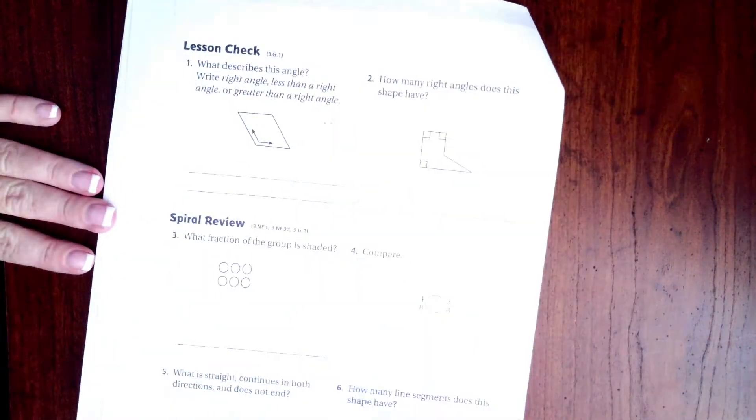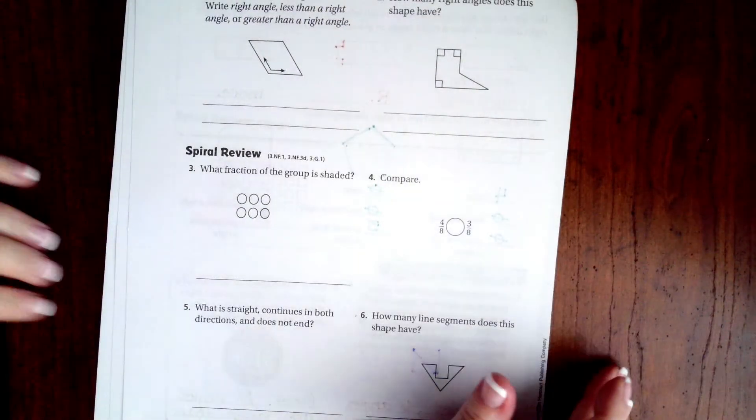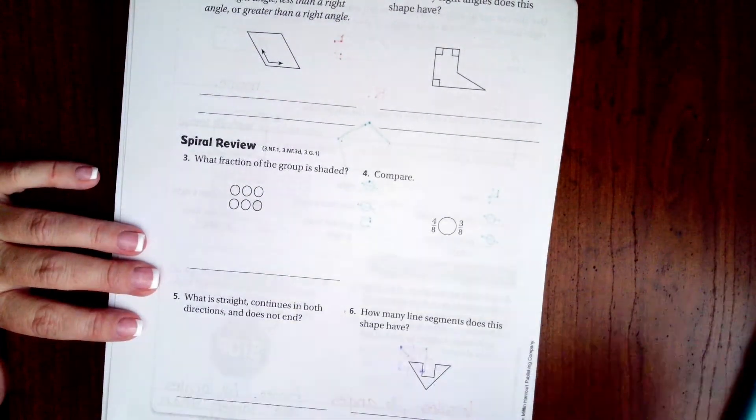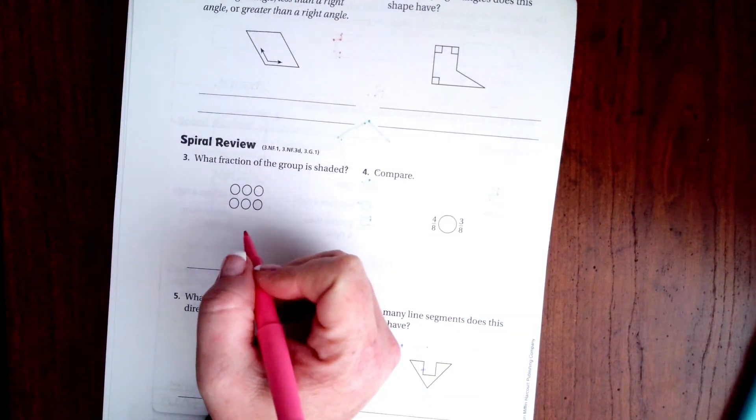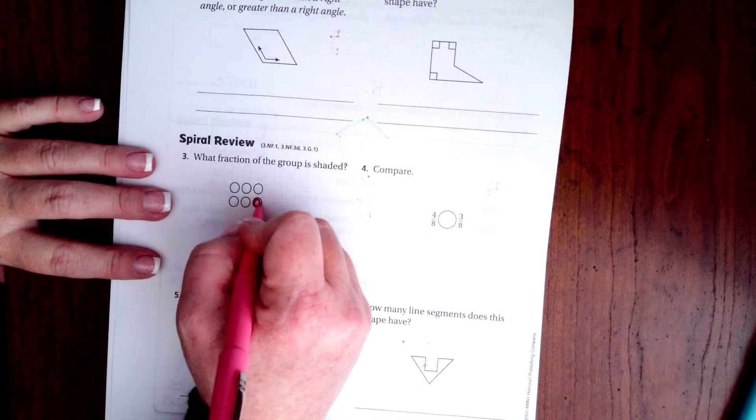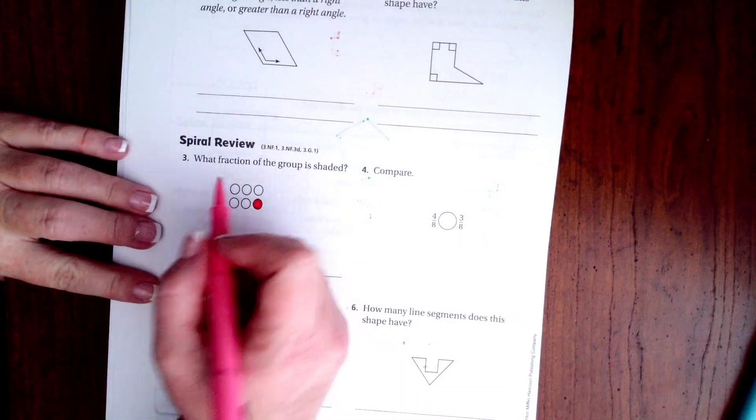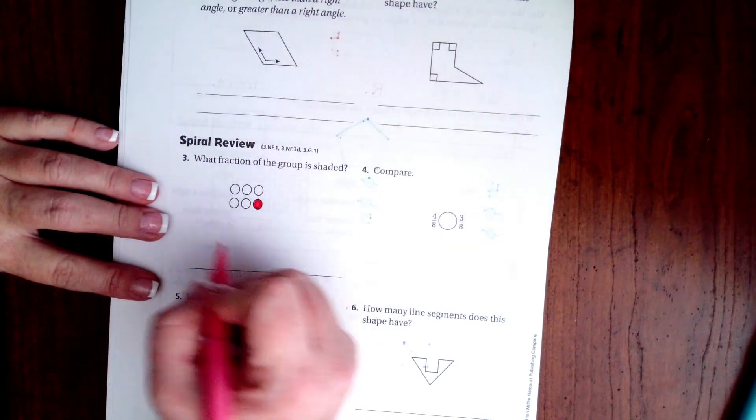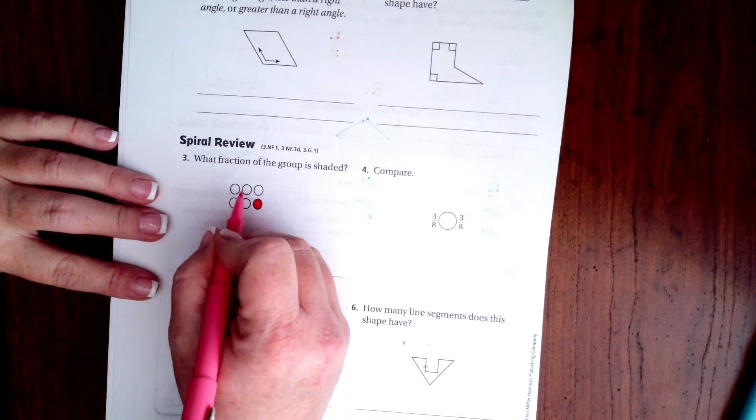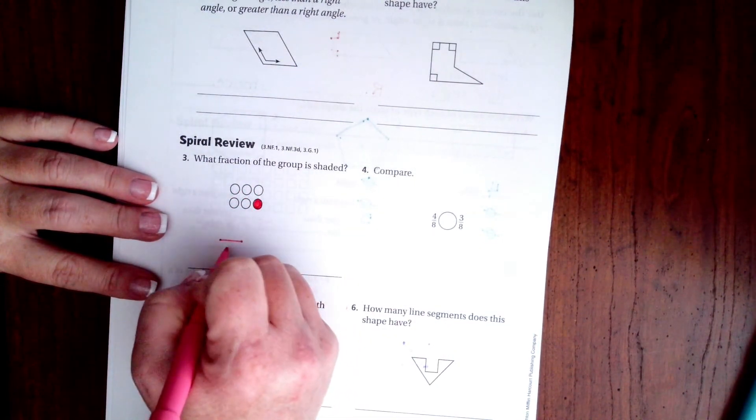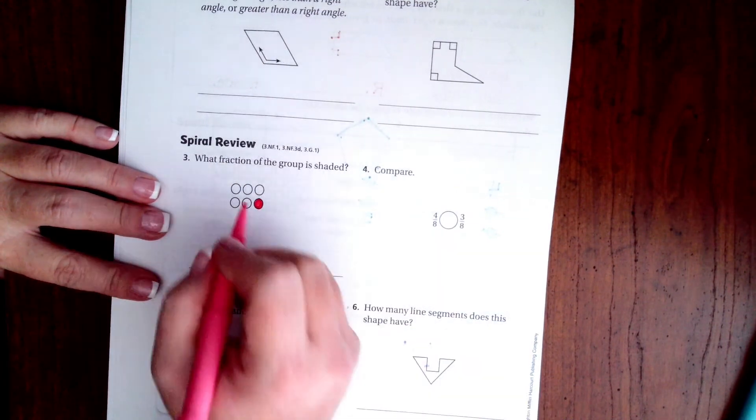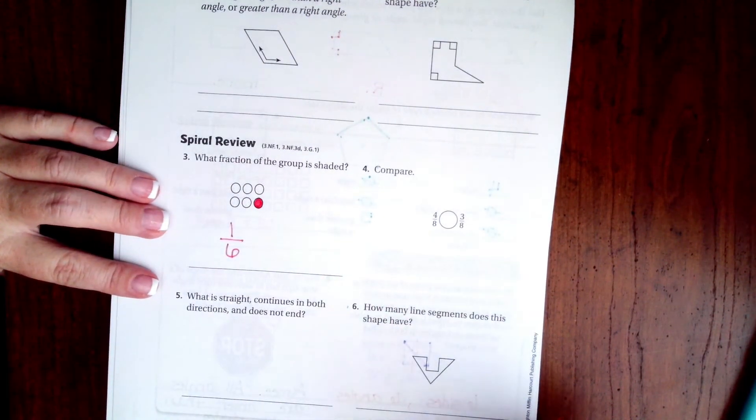Now I'm going to go ahead and flip it over. You guys are going to do the lesson check just like always. We are going to do the spiral review. I know that you guys can't see, but only this one is shaded in. What fraction of the group is shaded? Well, there are one, two, three, four, five, six all together, so that's my denominator, my bottom number, and only one of them is shaded, so that's one.